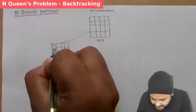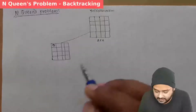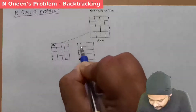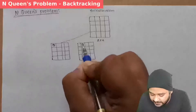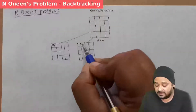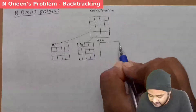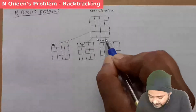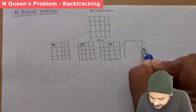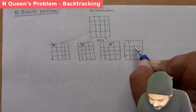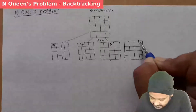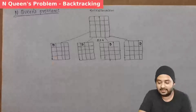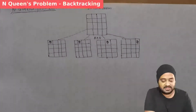One option is to place the first queen in the first position. We construct another branch for placing the first queen in the second position. The next option is placing it in the third position, and then in the fourth position. So these are the first-level options for placing the first queen. Here we have placed the first queen in the first box.